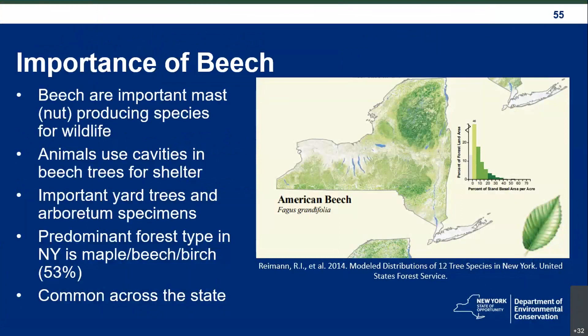The first thing I wanted to touch on is the importance of beech trees. Beech are a really important wildlife species — they produce nuts that a lot of species rely on to get through the winter. Some animals use cavities in beech trees for shelter, and they make up a lot of forest habitat in New York State. The predominant forest type in New York is maple-beech-birch, which makes up 53% of New York State's forest. There are a lot of trees here at risk from this disease.